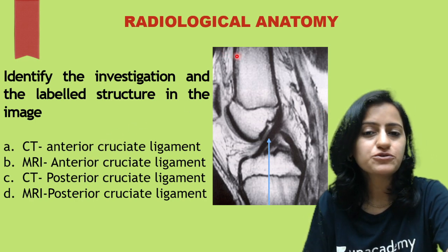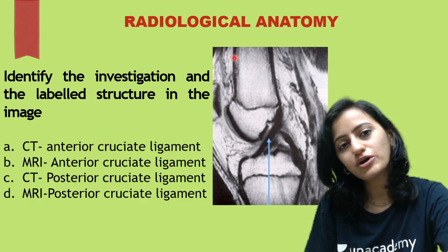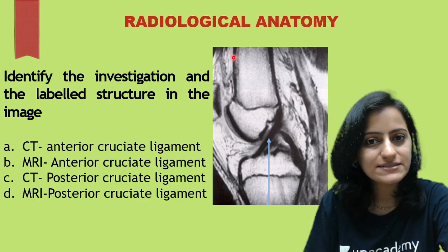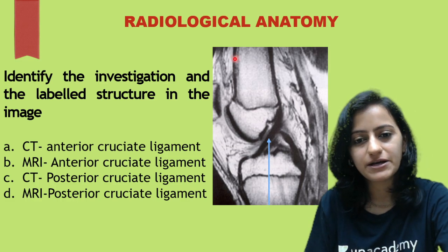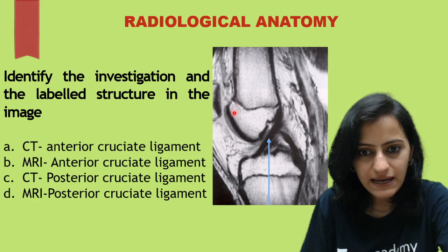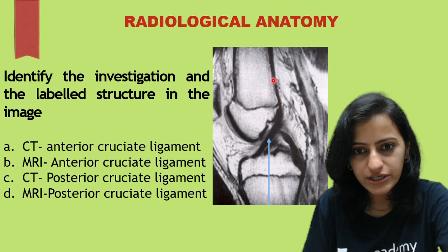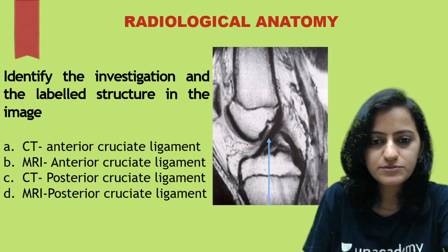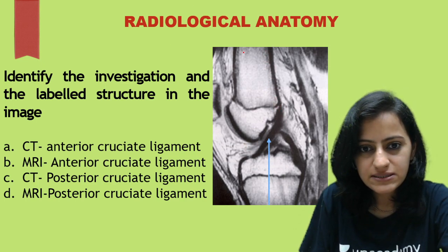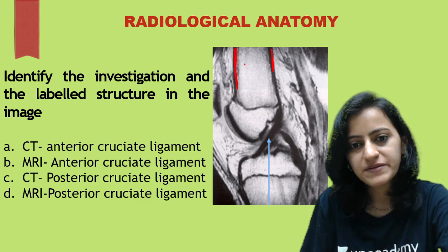The thing to look for is the bone cortex. If the bone cortex is white, it is a CT scan. If the bone cortex is black, it is MRI. What we see here as the black line is the bone cortex — so this is an MRI.